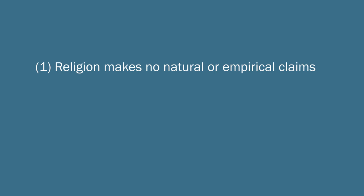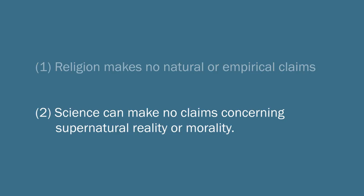The first is that religion makes no natural or empirical claims. Because remember, for Gould, the idea is that religion talks about ultimate meaning and moral value, not matters of fact and theory. The second claim is that science can make no claims concerning supernatural reality or morality. Because again, for science, it's just supposed to tell us what the natural world contains and how those things work.